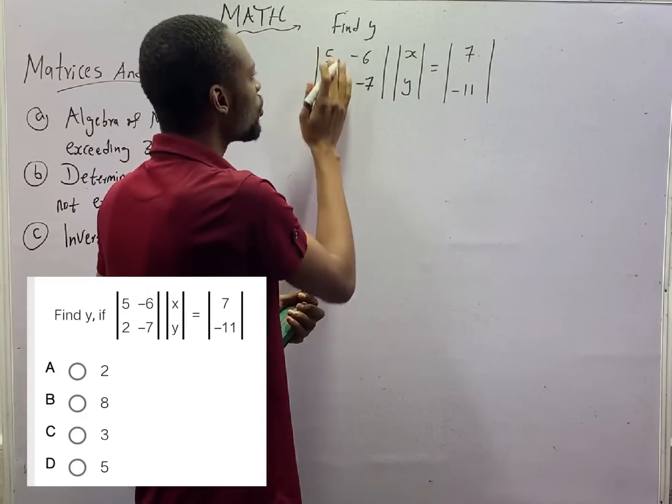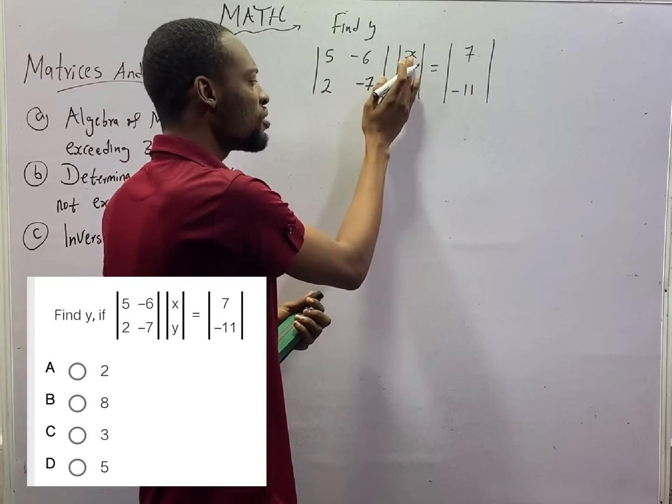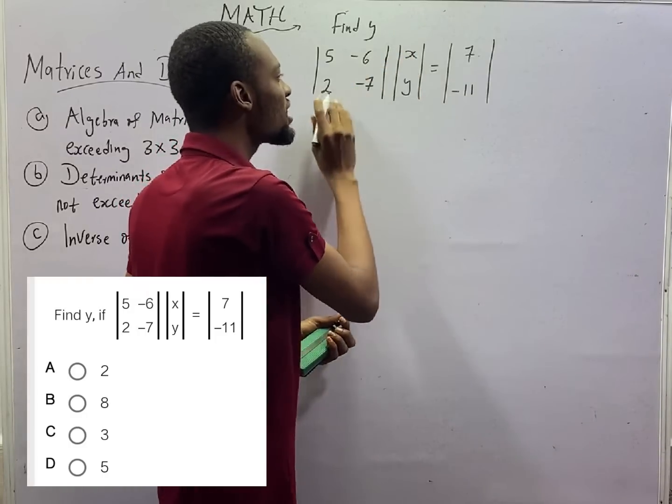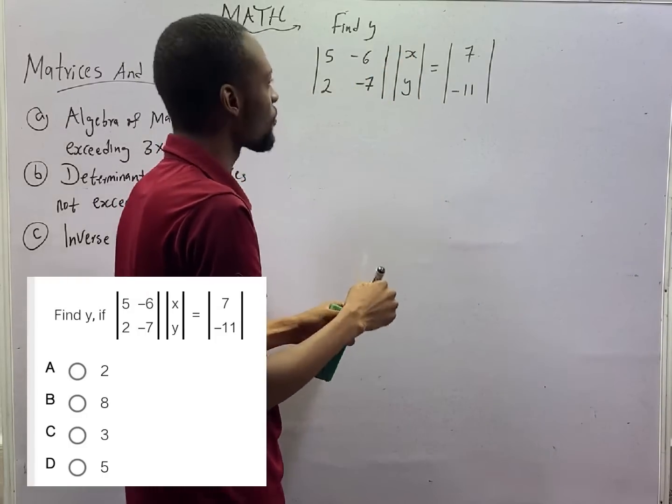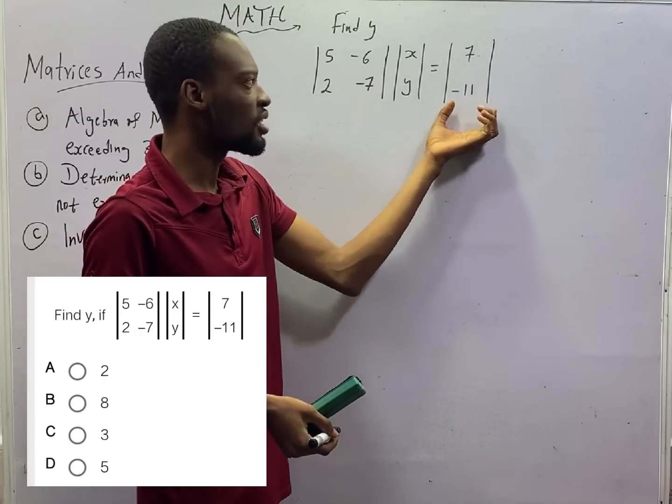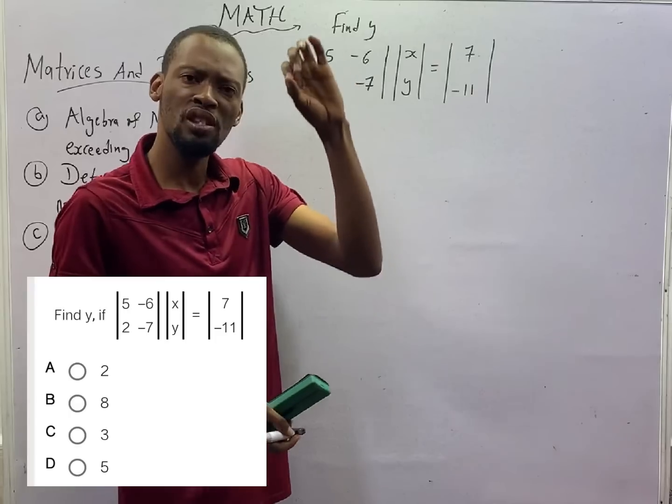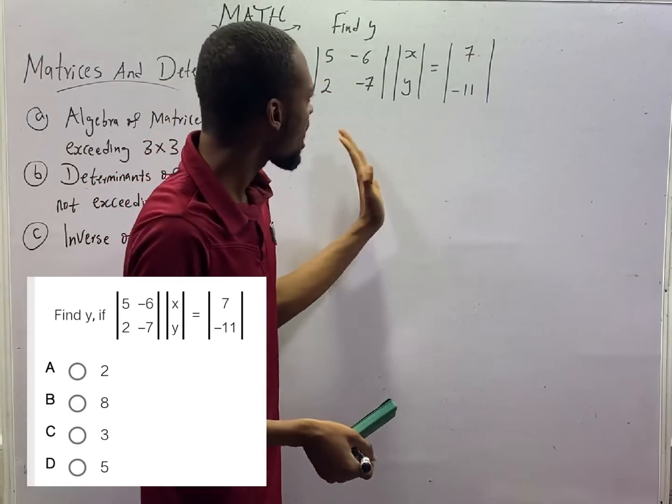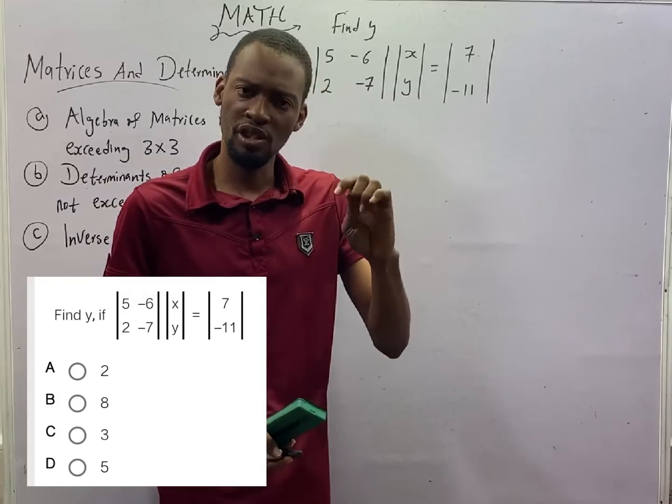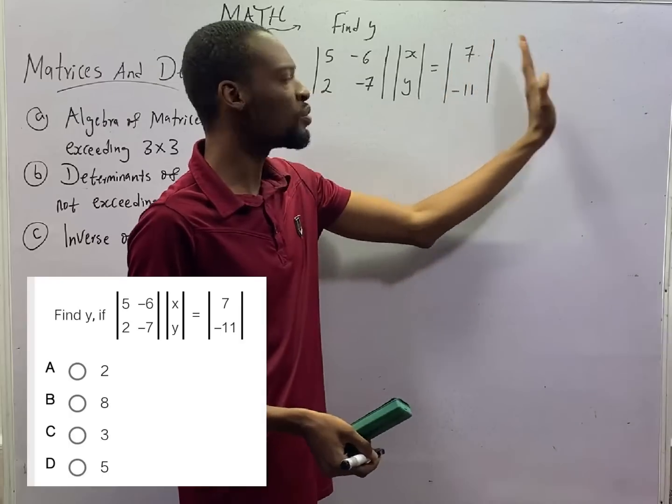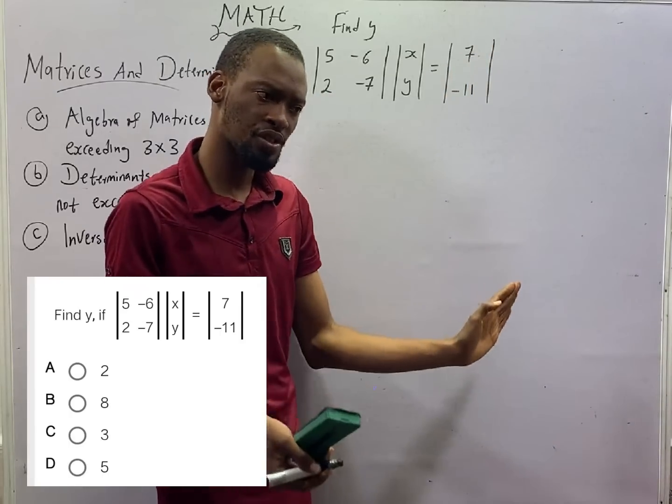Now, look at this matrix. It has two columns. And look at the second matrix. It has two rows. So, this guy and these guys can be multiplied. When you are given a matrix like this to be equal to this, this will definitely lead to a simultaneous equation for sure. But, how do you arrive at the simultaneous equation? You use this matrix to multiply that and you equal it to the second matrix.